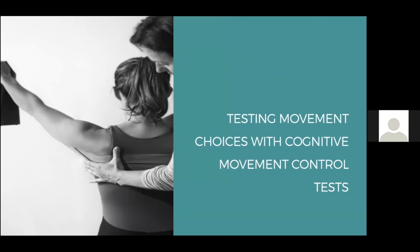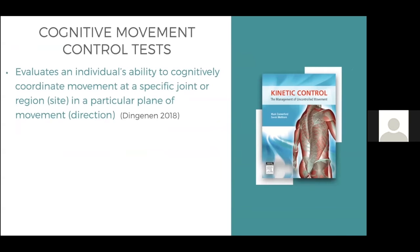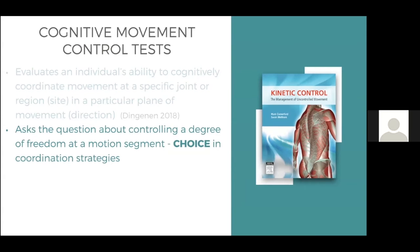To finish, I'll look at the cognitive movement control tests, all written out in our book 'Kinetic Control: The Management of Uncontrolled Movement.' What we ask a person to do is coordinate movement at one particular joint — we control movement in one joint in one plane — and we ask the question: can you control movement at that motion segment? It illustrates whether we have a choice in movement coordination strategies.